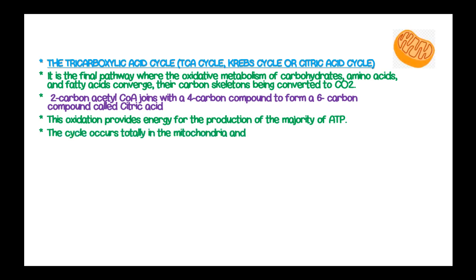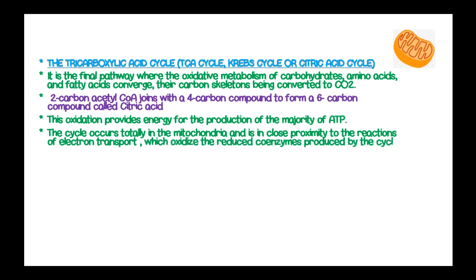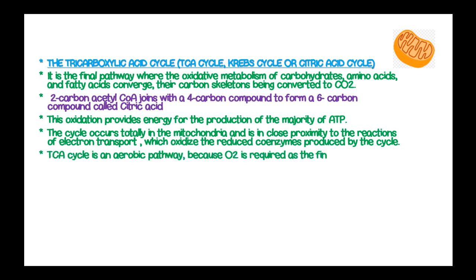The cycle occurs totally within the mitochondria and is in close proximity with the reactions of electron transport, which oxidize the reduced coenzymes produced by the cycle. The TCA cycle is an aerobic pathway because oxygen is required as the final electron acceptor.